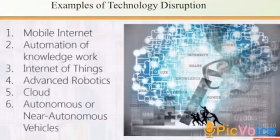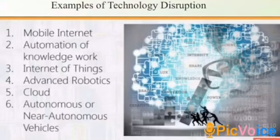Internet of Things is a system of interrelated computing devices, mechanical and digital machines, which are produced with unique identifiers and are able to transfer data over a network without requiring human-to-human or human-to-computer interaction.